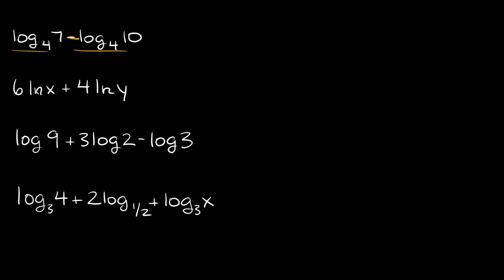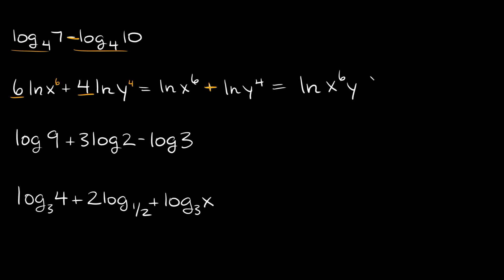The second one: 6 times the natural log of x plus 4 times the natural log of y. We have numbers out in front, which means those are actually exponents. So this 6 goes up as the exponent on x, and 4 goes up as the exponent on y. Rewriting it: the natural log of x to the 6th plus the natural log of y to the 4th. We're adding, so that means multiplication — stick them together. This equals the natural log of x to the 6th times y to the 4th.